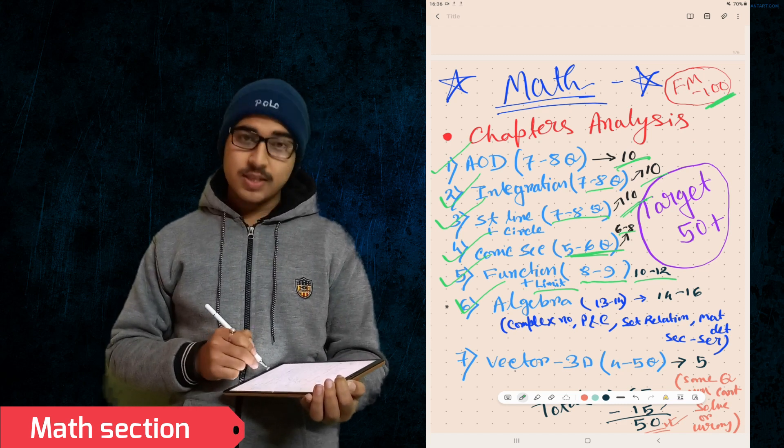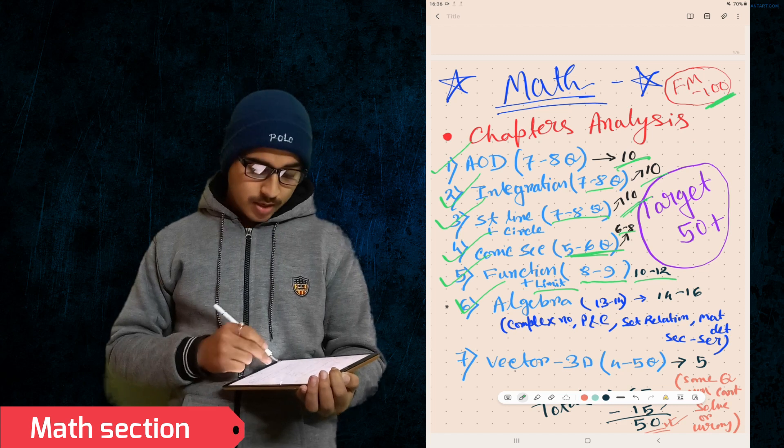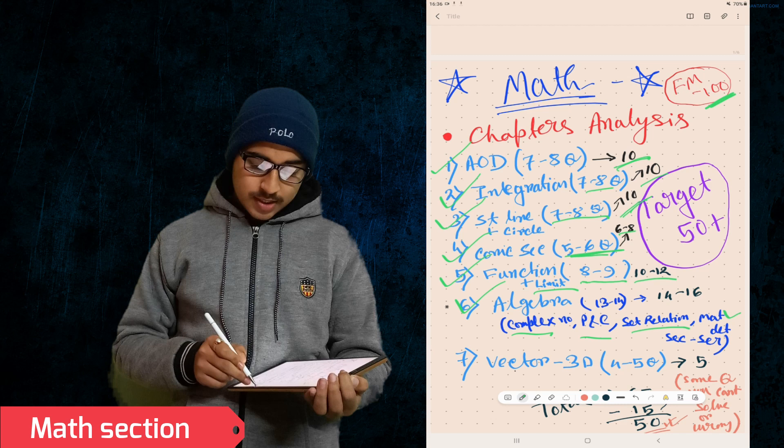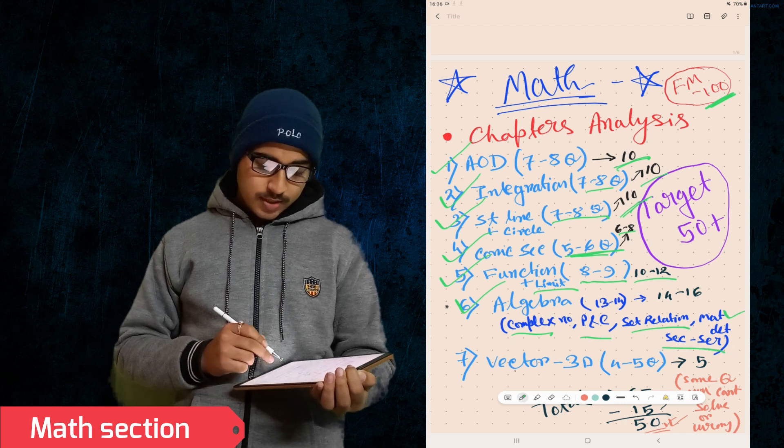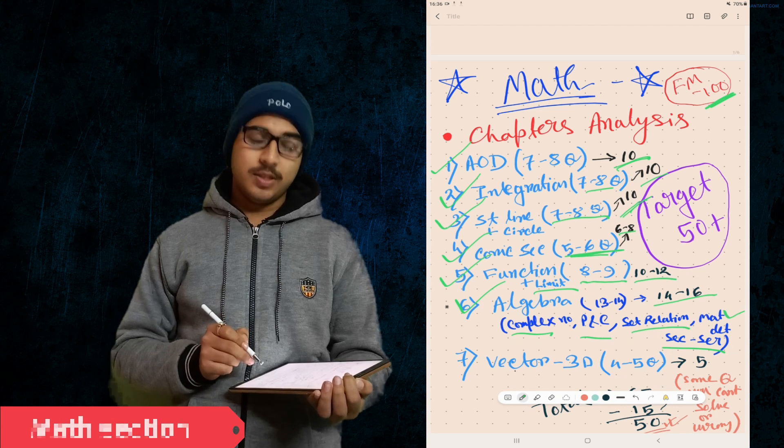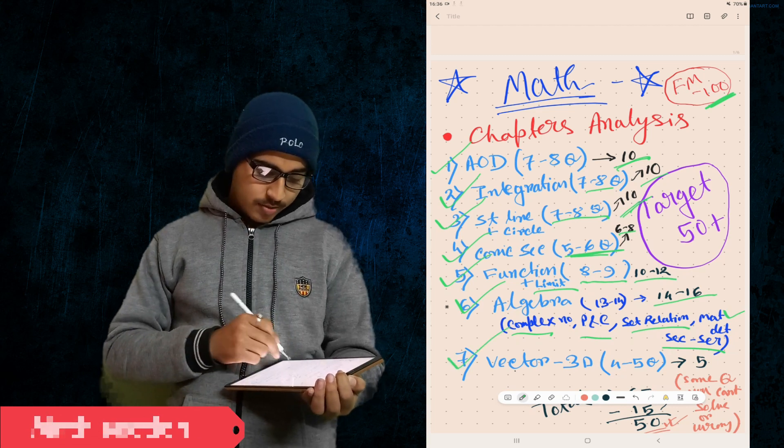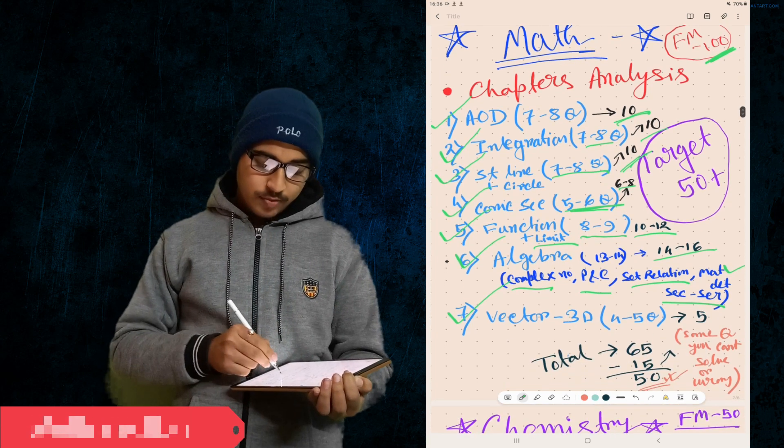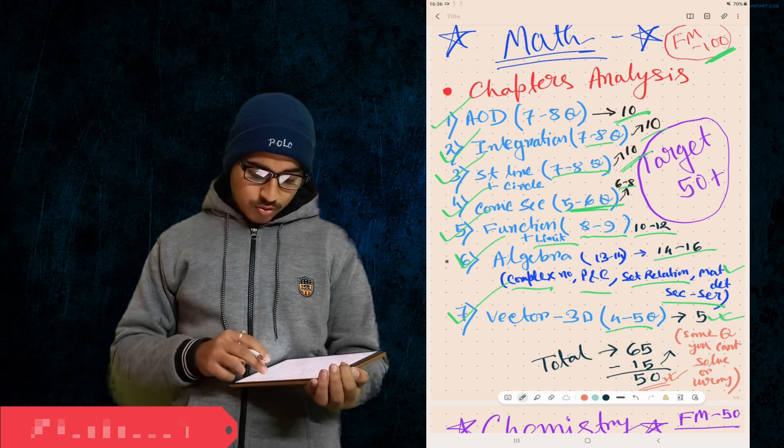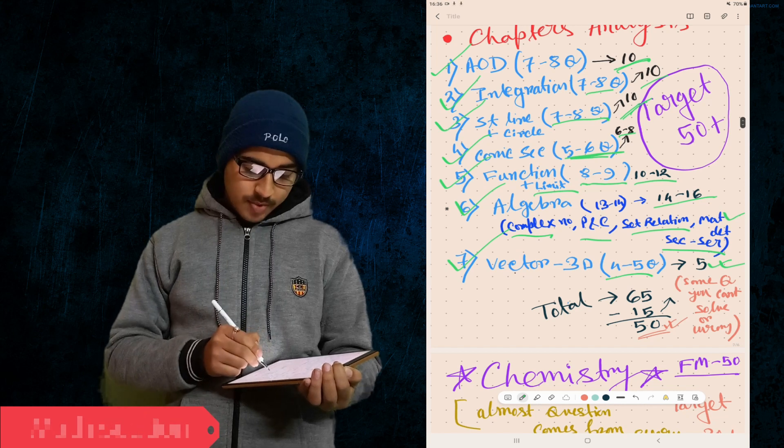Algebra is the easiest chapter - Complex Number, Permutation Combination, Matrix Determinant, Sequence and Series. By these five chapters you can get around 14 to 16 marks. Now Vector - four to five questions, I'm taking highest as five marks. Total is 65 marks.